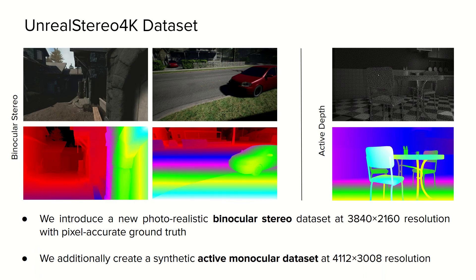In order to validate our novel formulation, and motivated by the lack of large-scale high-resolution stereo datasets, we also introduce a new photorealistic binocular stereo dataset at 8 megapixel resolution with pixel-accurate ground-truth disparity maps. Furthermore, we also render a novel synthetic Kinect-like dataset to show the effectiveness of our proposal, also on the active monocular depth estimation task.